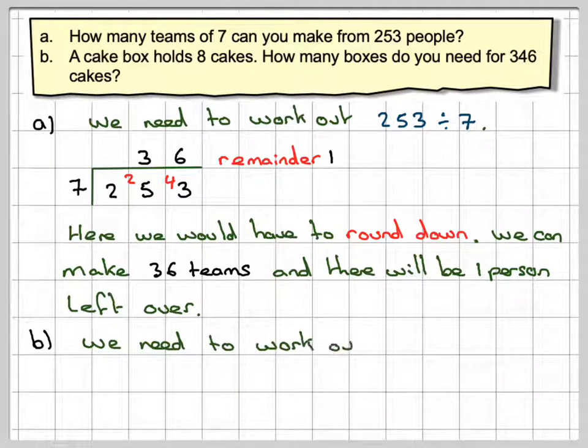Part B we would need to work out here 346 divided by eight. So a cake box holds eight cakes. How many boxes do you need for 346 cakes? So we need to do 346 cakes.